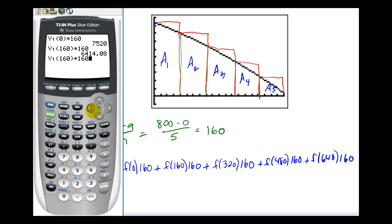There's the area of the second rectangle. Press second, enter again, now I change y1 of 160 to y1 of 320. There's the area of the third rectangle, and so on.